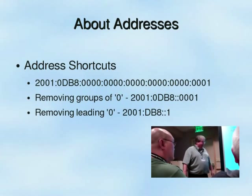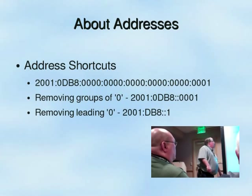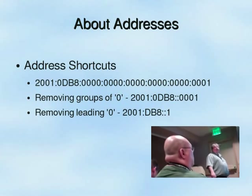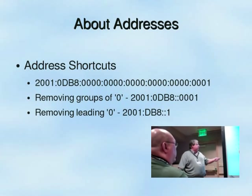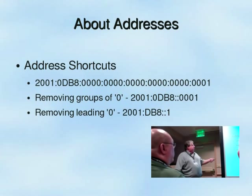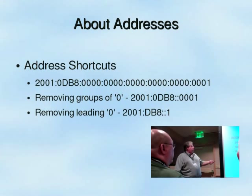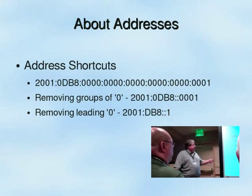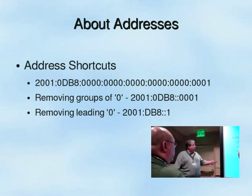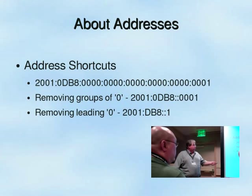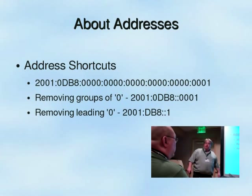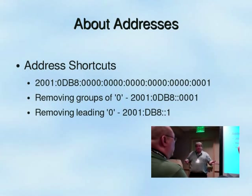Let's talk about address shortcuts. This is a fully populated IPv6 address. We can remove groups of zeros and replace them with a double colon, shrinking the whole address down significantly. We can also remove leading zeros. This is the actual IPv6 address you can program into your system — so the address isn't that big.